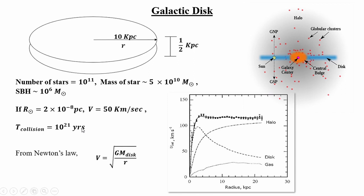The collision time turns out to be 10^21 years. Since the universe age is about 13.8 billion years, this is far more than the universe's age. So we can easily say that the dynamics of a star are not governed by collisions. All the motion of stars is governed by gravitational features. Assuming stars move in a circular direction in the Milky Way, we can apply Newton's law.